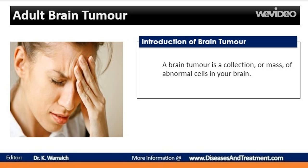The brain is a soft mass of tissue that has three major parts: the cerebrum, cerebellum, and the brain stem, all of which are effectively surrounded and protected by the bones of the skull. The brain is the tissue that controls people's voluntary and involuntary actions — that is, bodily functions, thoughts, and sensations.